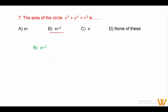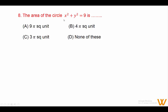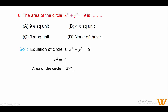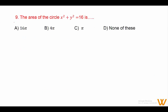Question 8: The area of the circle x² + y² = 9. Given equation: x² + y² = 9, so r² = 9. Area of circle = πr² = π × 9 = 9π. Answer is option A: 9π square units.